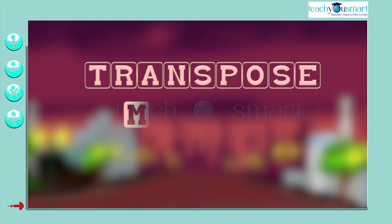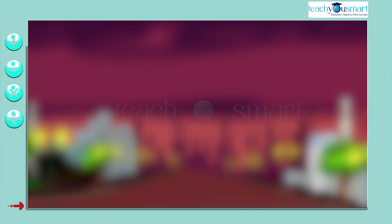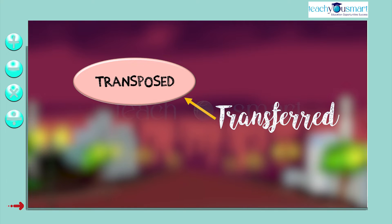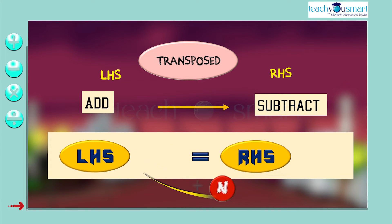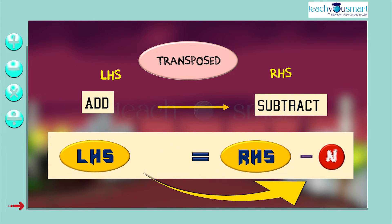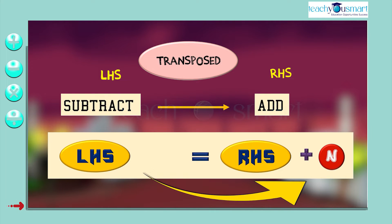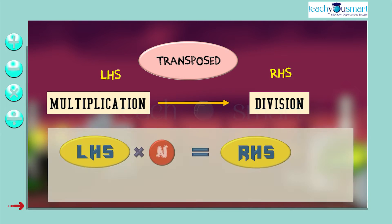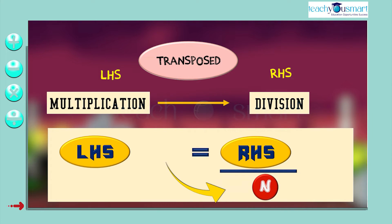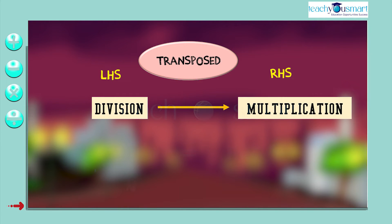Another method is the transpose method. Before we enter the transpose method, we need to understand a few concepts. Transposed basically means transferred. When a term is transposed from LHS to RHS, addition becomes subtraction and subtraction becomes addition. A term that is multiplied on one side is divided when transposed to another side. Similarly, a term that is divided on one side is multiplied when transposed to another side.